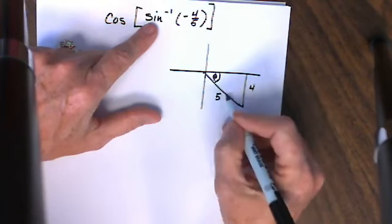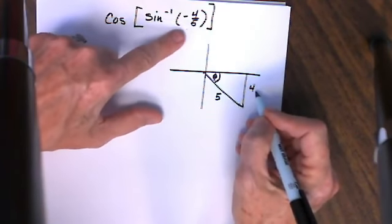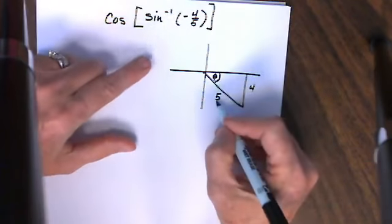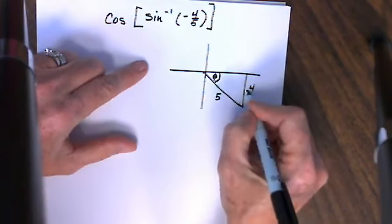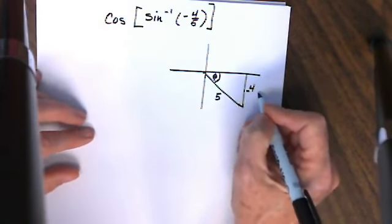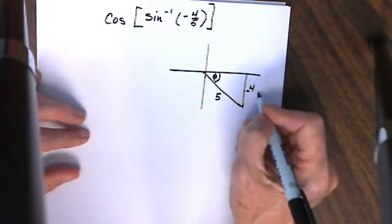Now clearly either the 4 or the 5 must have been negative to produce this negative ratio. Since the hypotenuse is never negative it must be the 4 which was negative in this particular case.